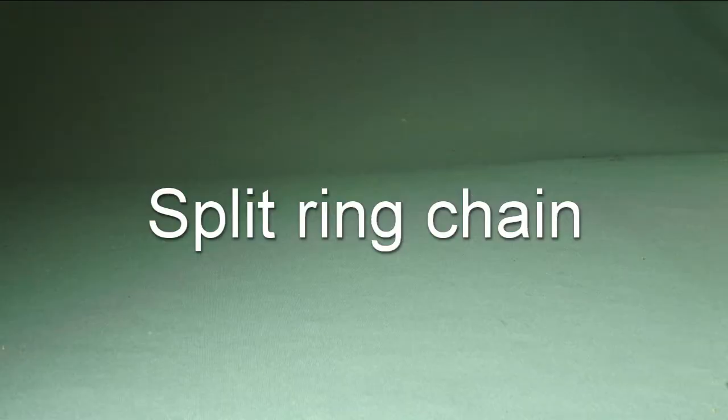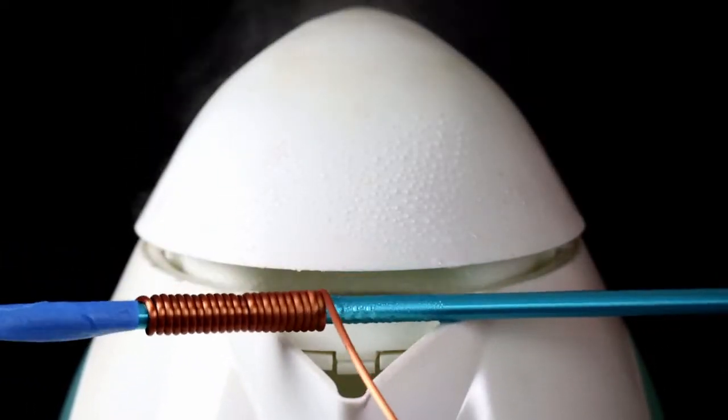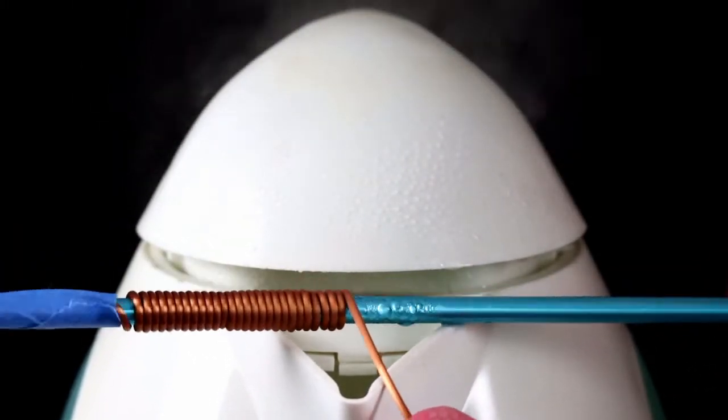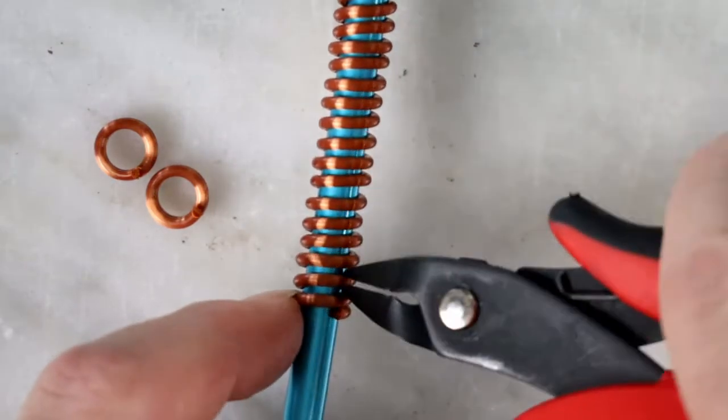Split-links chain is easier because you don't have to seal anything. Make the coils as usual. But cut only every other full circle.